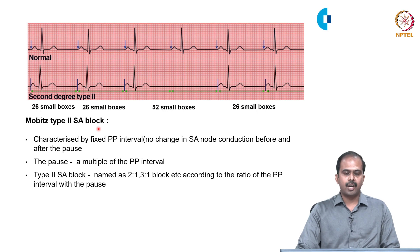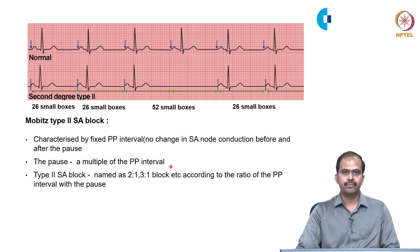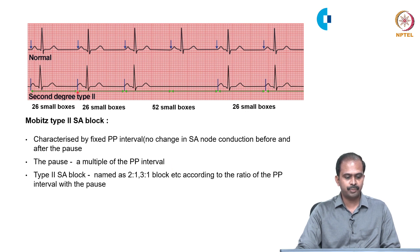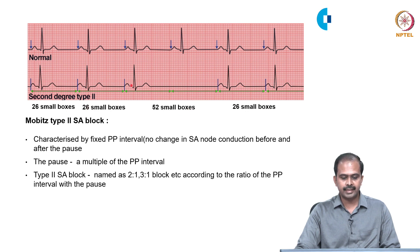Mobitz type 2 block is characterized by a fixed PP interval with no change in SA node conduction before and after the pause. The pause is an exact multiple of the preceding PP interval. In this example, the PP intervals are equal before the pause, and the pause is an exact multiple of the preceding PP interval, confirming Mobitz type 2 SA block.